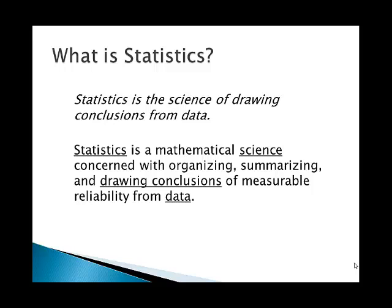One detail I'd like to talk about is that we are drawing conclusions of measurable reliability from data. If we look informally at the means from two samples from two different populations, we can intuitively conclude that the two populations have different means. What we can't do intuitively is say something like, 'We are 95% certain that our conclusion is correct.' That's the sort of thing good inferential statistics can do for us, and we will learn to do that as we move through the course.